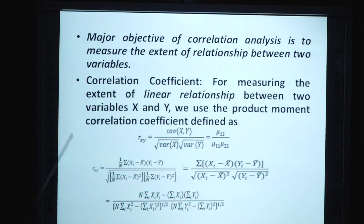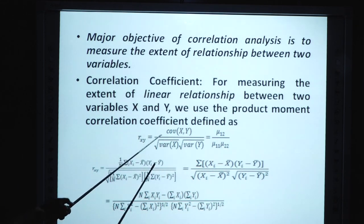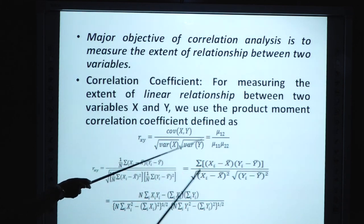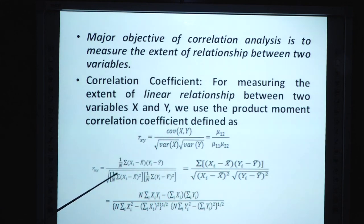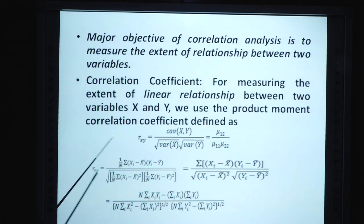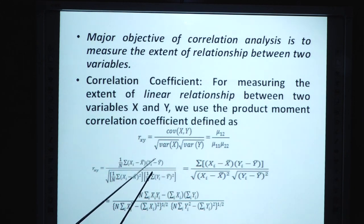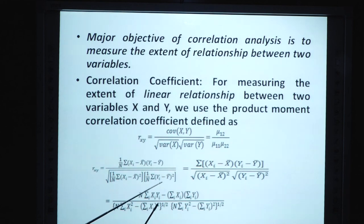The objective of correlation analysis is to measure the extent of relationship between two variables. For measuring the extent of linear relationship between two variables X and Y, we use the product moment correlation coefficient defined as: r_xy = Covariance(X,Y) / sqrt(Variance(X) × Variance(Y)) = μ₁₁ / sqrt(μ₀₂ × μ₂₀). इसको simple r से भी denote करते हैं और यह Carl Pearson Correlation Coefficient कहलाता है.